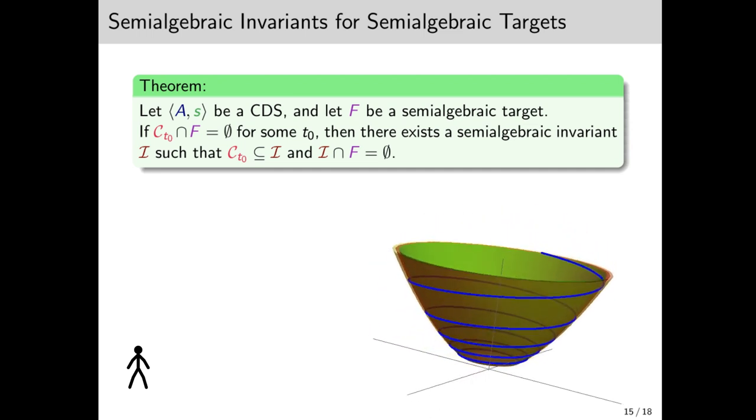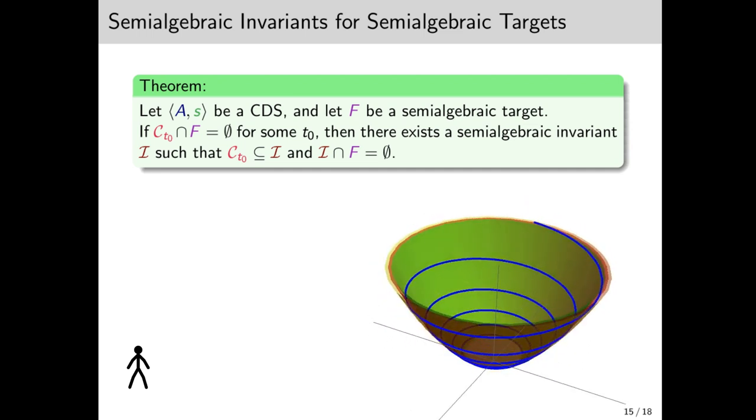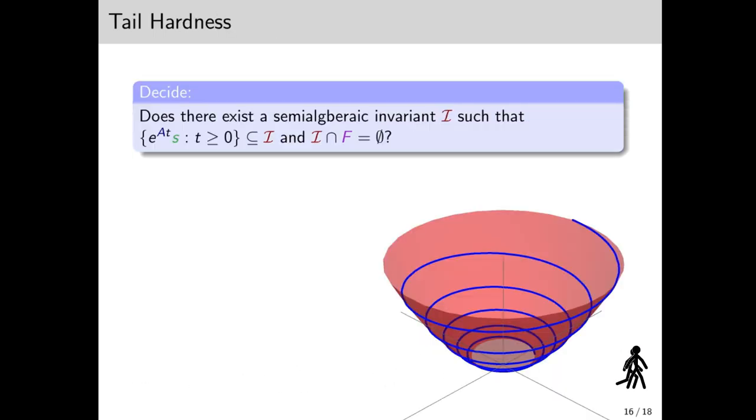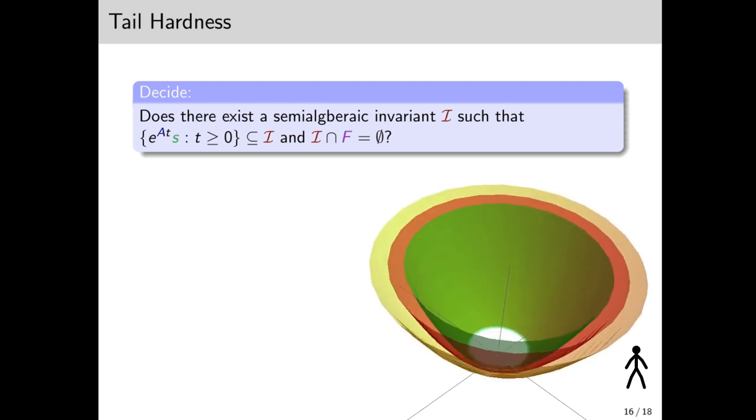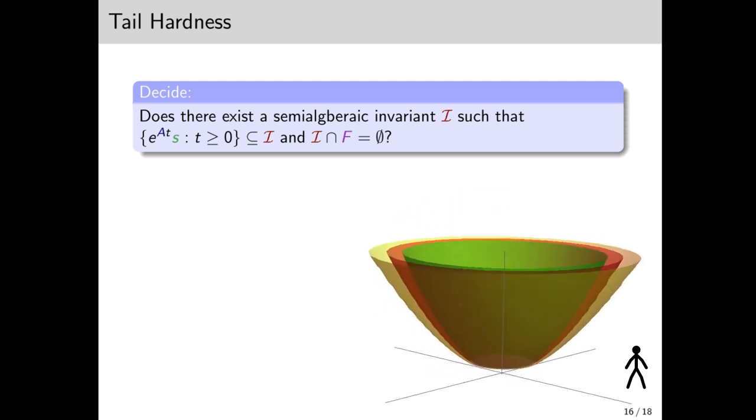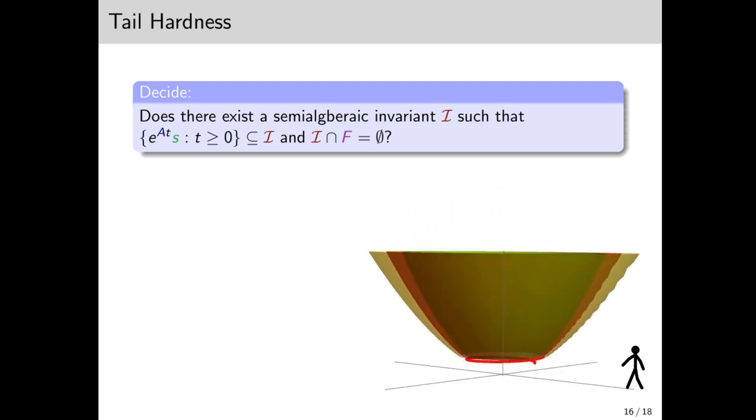Now, this has to be done carefully. Specifically, we need to maintain any linear dependency between the eigenvalues, but we won't go into that now. Now we know that semi-algebraic targets admit semi-algebraic fat cones. But that still doesn't give us an invariant for the entire orbit, since we have the tail.